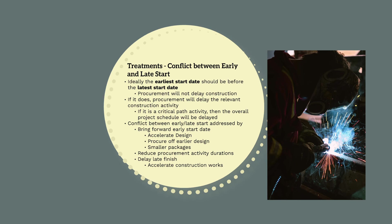We can address this a number of ways. We can bring forward the early start date by accelerating the design and procuring off an earlier revision of the design — however, this will introduce design risk — or by procuring smaller early works packages to meet the construction program and allow some extra time to procure larger packages. Alternatively, we could reduce the procurement activity durations. Or finally, we could delay the date the goods and services are required on site by accelerating the construction works. All of these options will have other consequences, like increased risk or cost, so proper judgement and assessment needs to be made to attain the best project outcome.